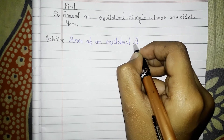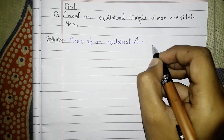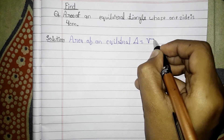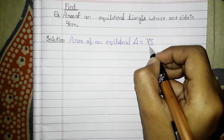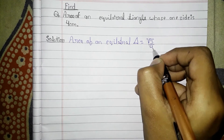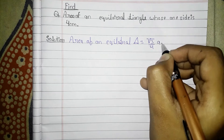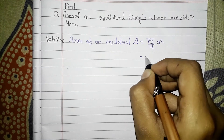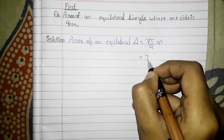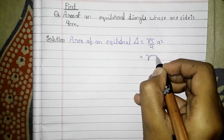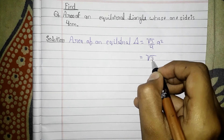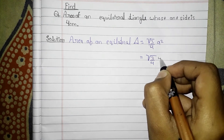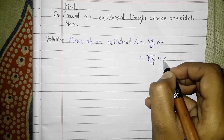The area of an equilateral triangle is √3 by 4 times a squared. Now put the values: √3 by 4, then 4 into 4.